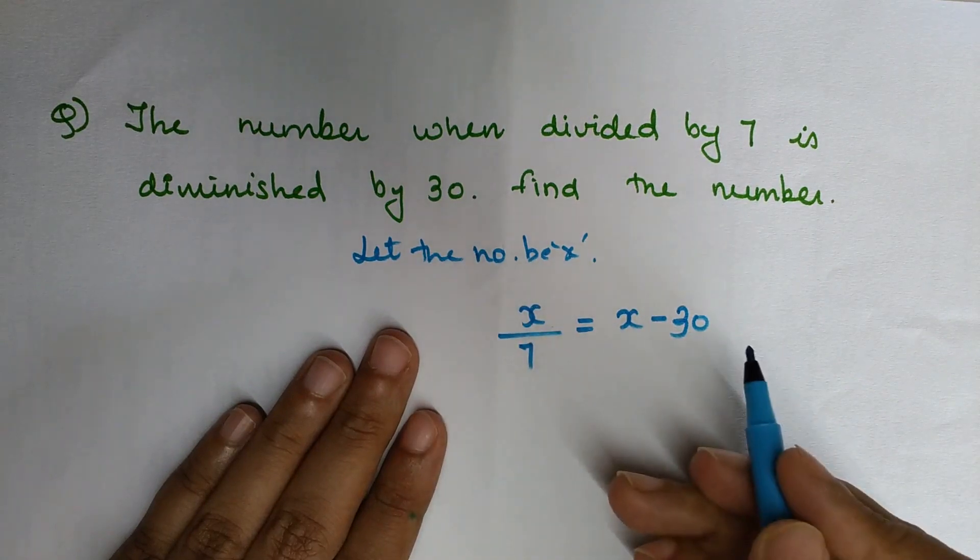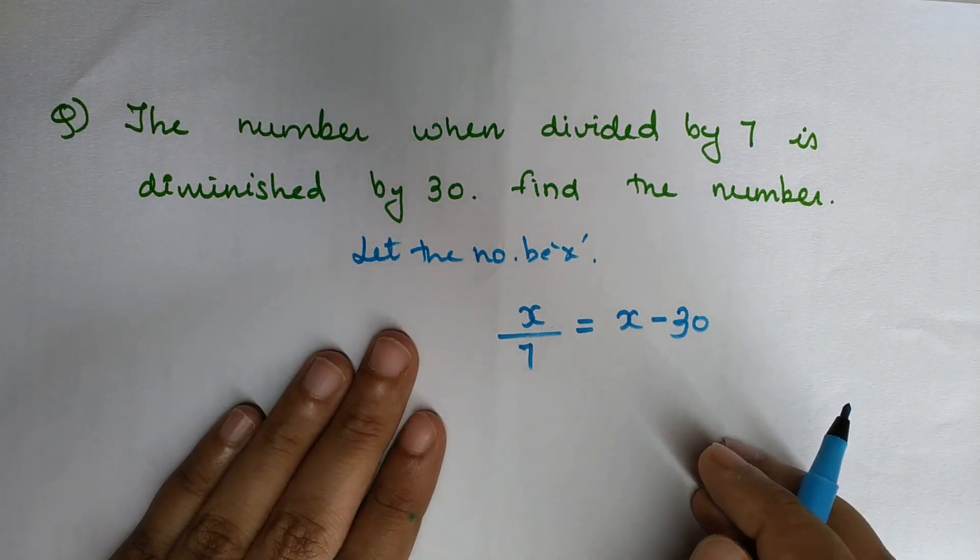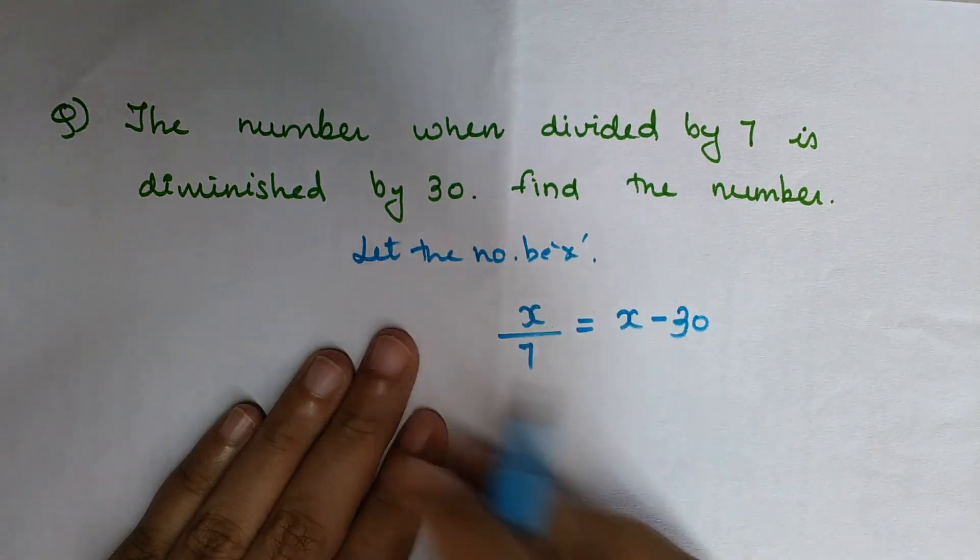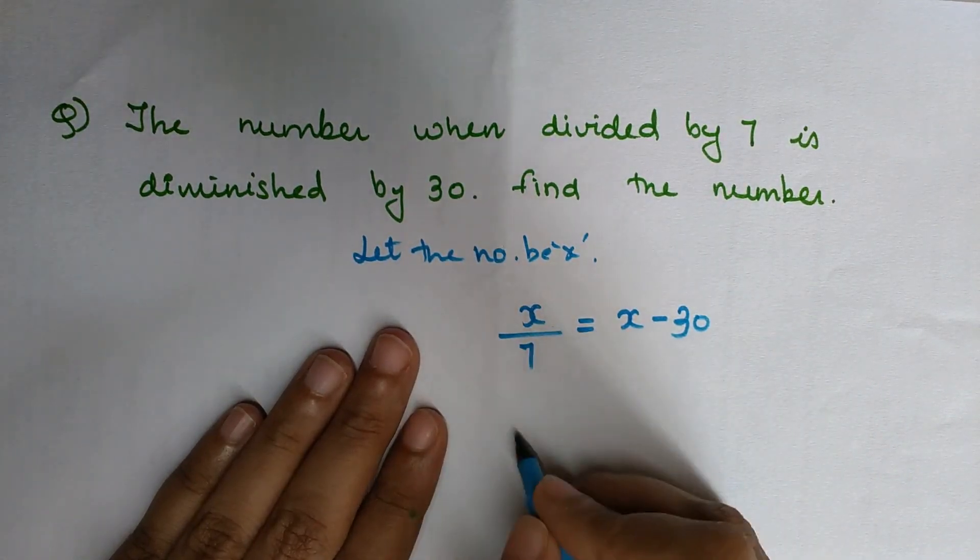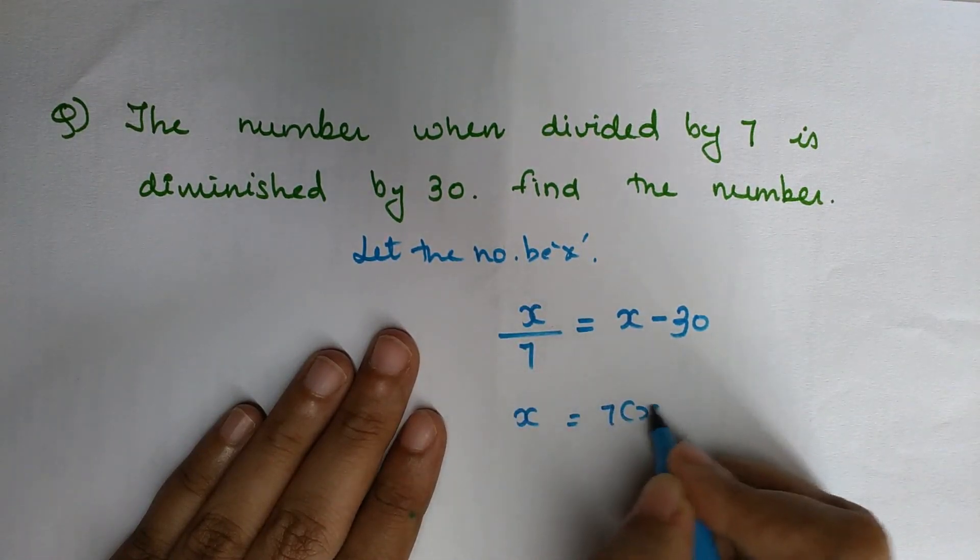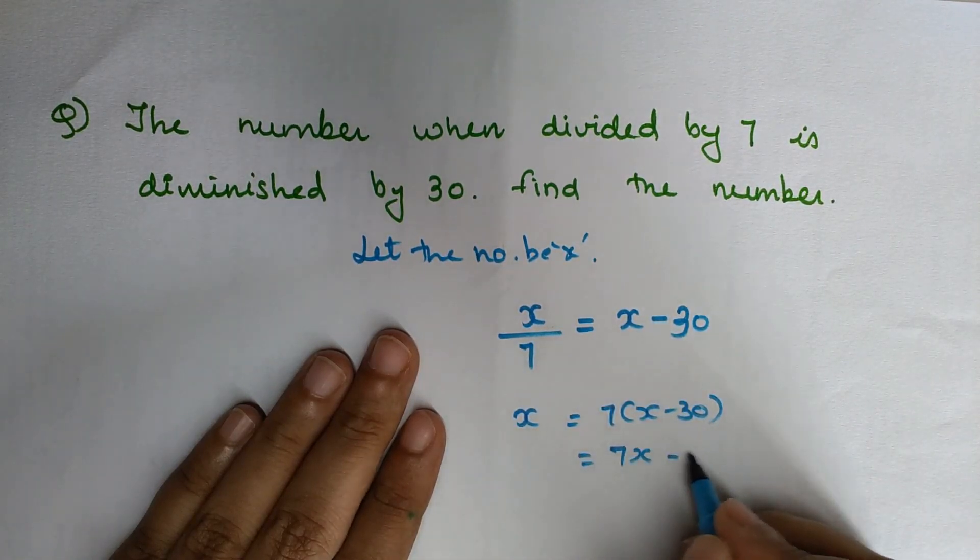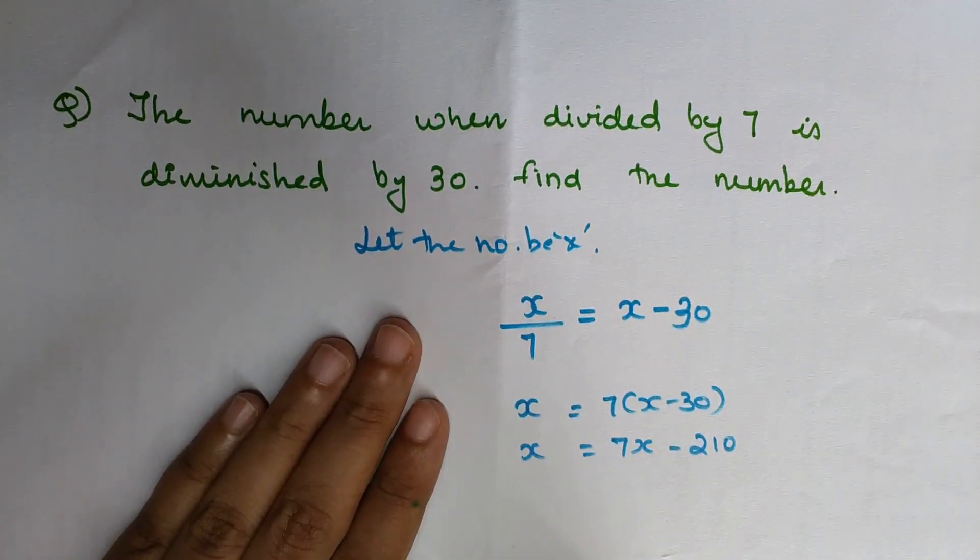You have one equation and one unknown, so you can easily solve this. Now take 7 to the other side: x = 7(x - 30). Opening the brackets, we get x = 7x - 210.